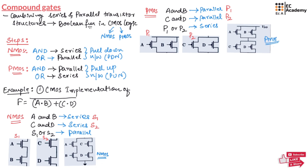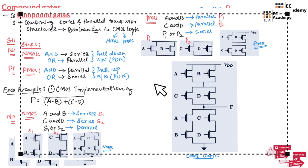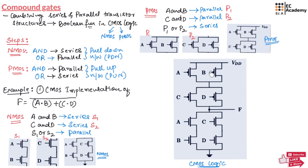This is the PMOS implementation where the circuit is connected to VDD. We now have the NMOS circuit and the PMOS circuit. These two should be connected together so that we can get the complete CMOS implementation. NMOS and PMOS are connected together and the output is taken from their junction to implement CMOS logic.